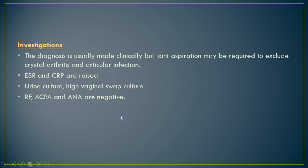The diagnosis of reactive arthritis is usually made clinically, but joint aspiration is required to exclude joint infection or crystal arthritis. As it is an inflammatory disease, ESR and C-reactive protein are usually raised. We look for the triggering infection by urine culture and high vaginal swab culture. Serology should be negative, including rheumatoid factor, anti-nuclear factor, and anti-citrullinated peptide antibodies.